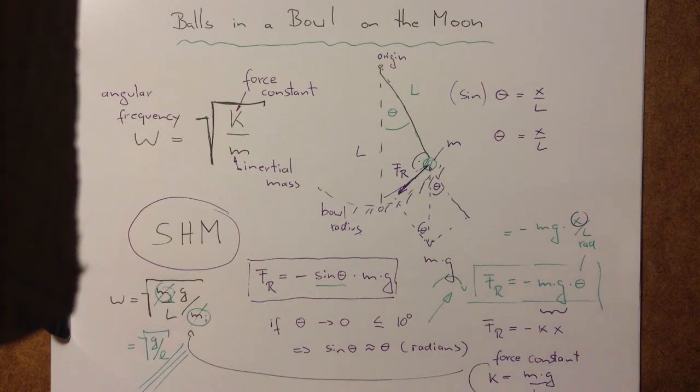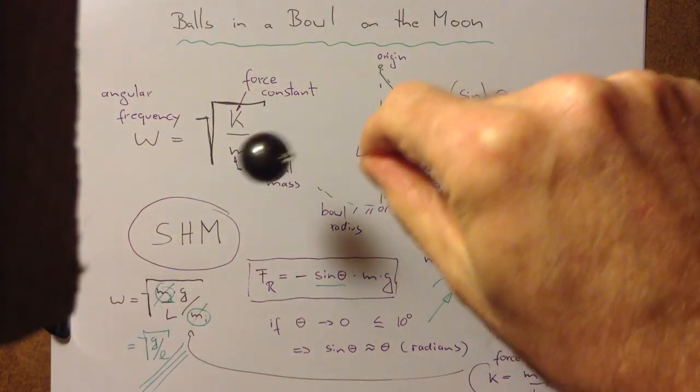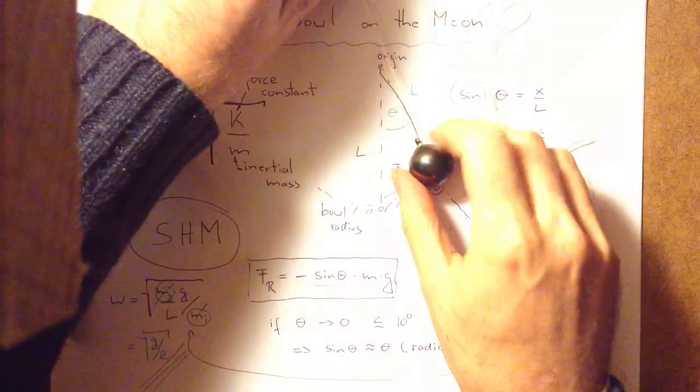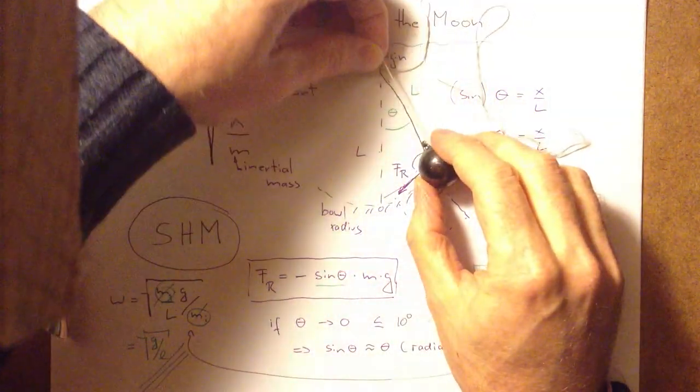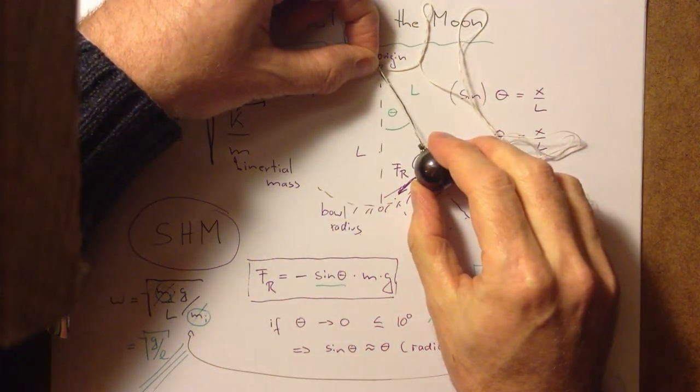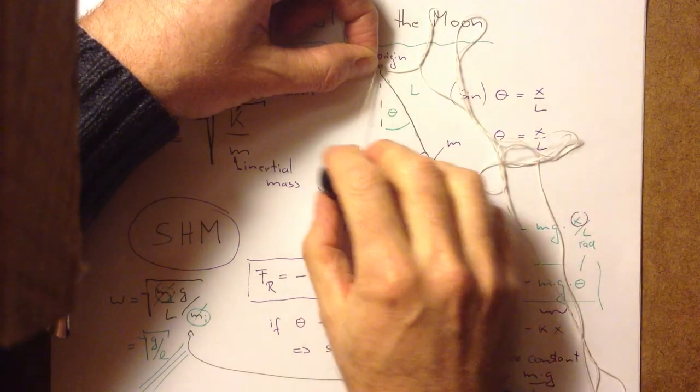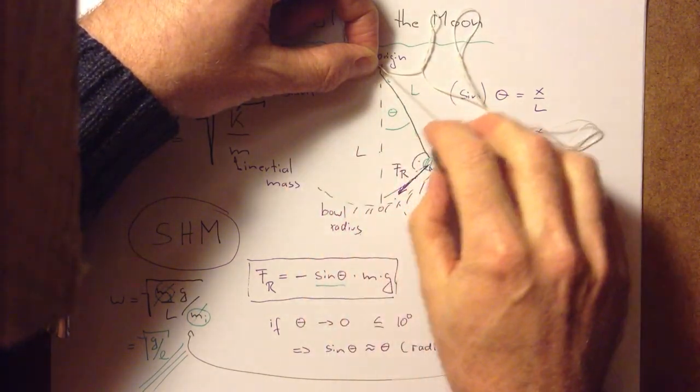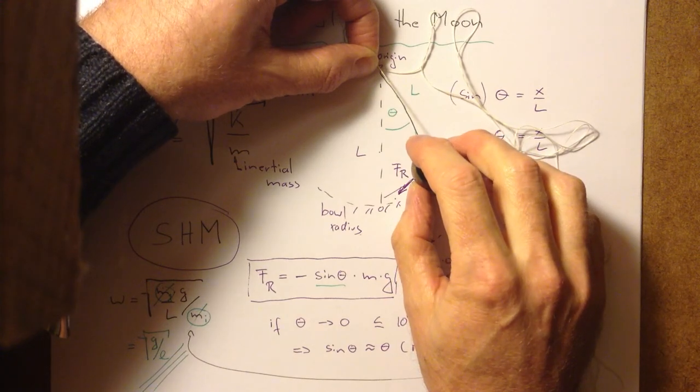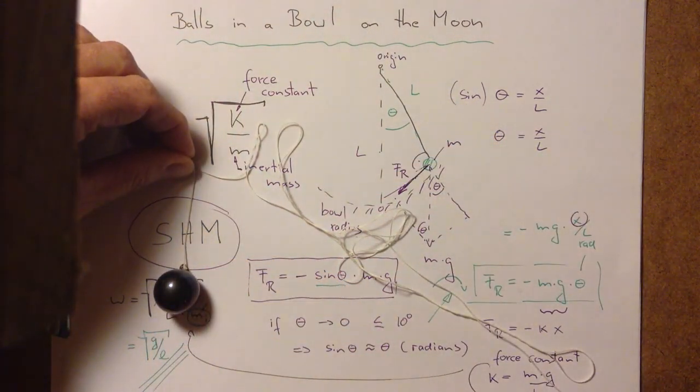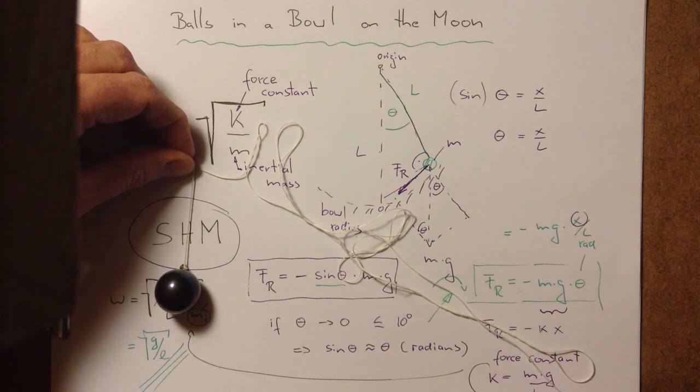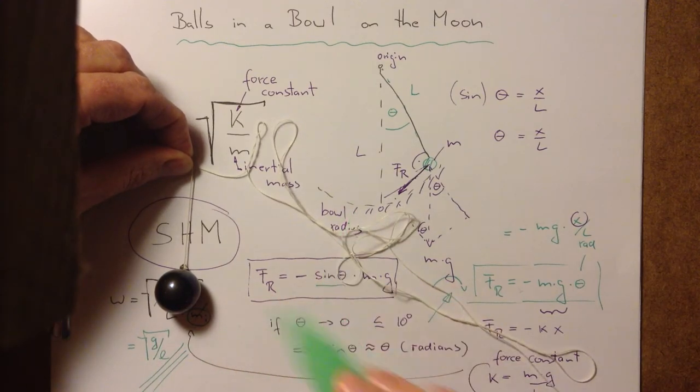Now, this doesn't just apply to balls in a bowl, but also to a pendulum, because the situation for the pendulum is exactly the same. You have a length of string, and you have a point mass or a ball bearing at this string, and it oscillates back and forth under gravity, and therefore, for the pendulum, we've got the same equation. The angular frequency is equal to the square root of G of gravity, the square root of gravity, G divided by the string length.